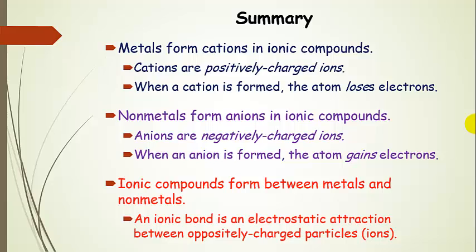Nonmetals form anions in ionic compounds. Anions are negatively charged ions that have excess electrons. They gained extra electrons, and that's where that negative charge comes from. Ionic compounds form between metals and nonmetals. An ionic bond is just an electrostatic attraction between oppositely charged ions.